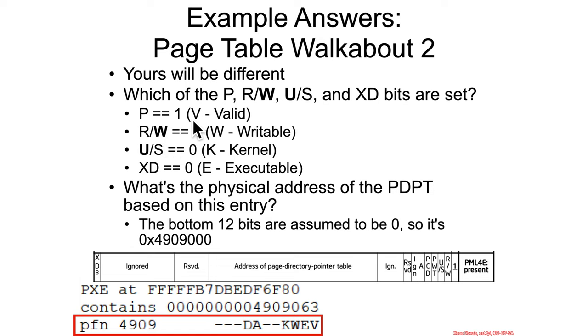I should say that the present bit equal to 1 up here is referenced as V here in WinDbg's output. They provide mnemonics here to make it easier so you don't have to always parse the entries using the raw bit fields. So V for valid.